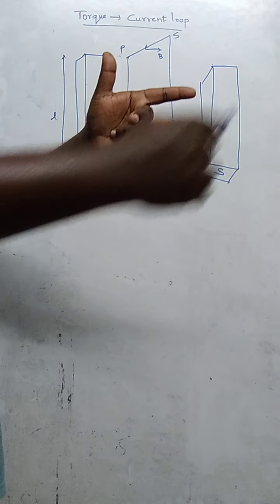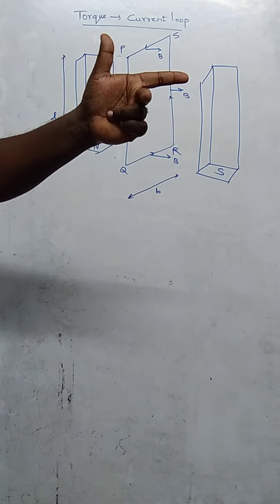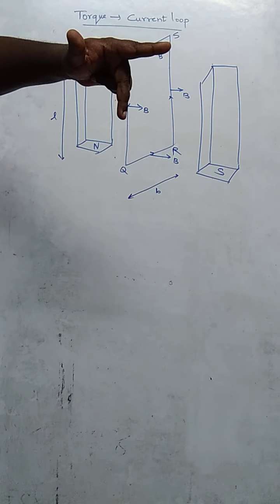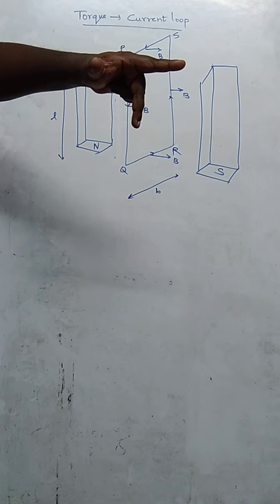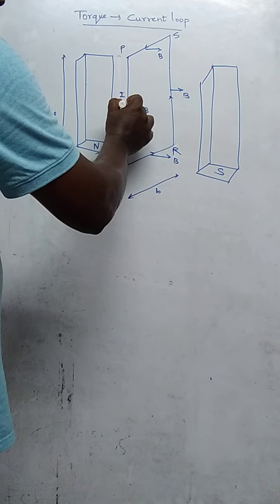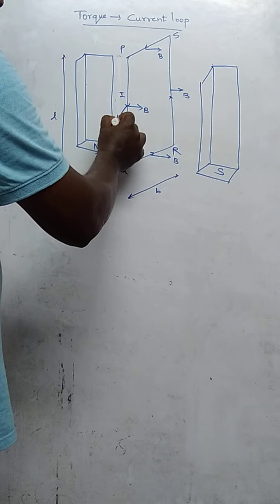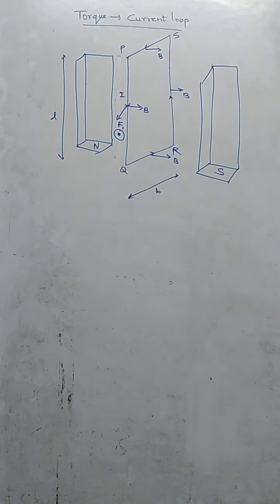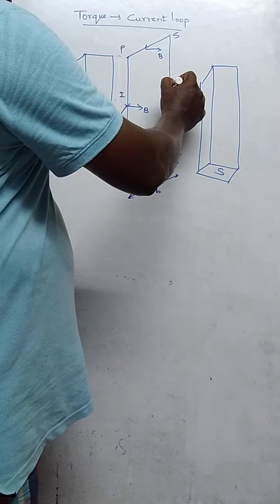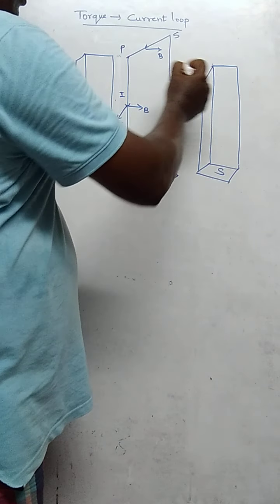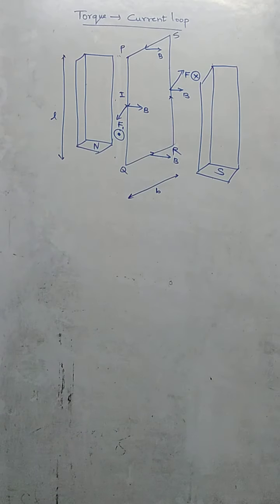The field is along the positive x-axis. The current is towards the downward direction, so the force will be acting towards you — that means the force will be acting in the upward direction, perpendicular to the plane of the paper. But here, the current direction alone changes, so this force will be acting in the downward direction.